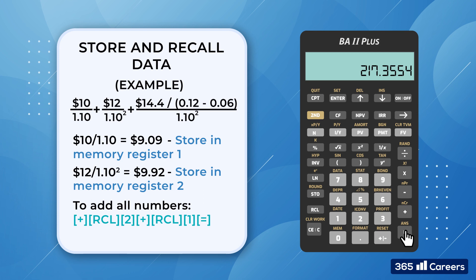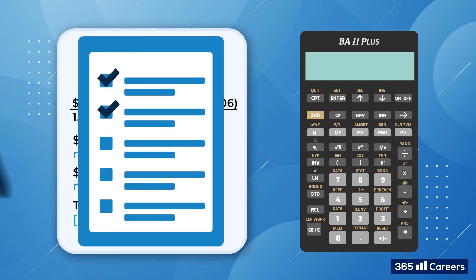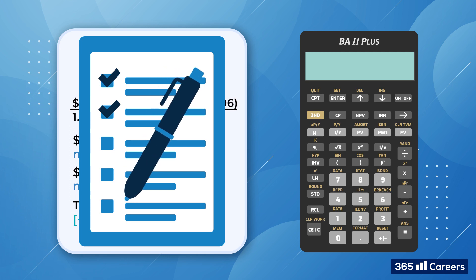The main reason we use the calculator's store function is to avoid writing down interim results. When we sit for the CFA or FRM exam, every minute is important. Moreover, when you store your interim results, you can always double-check them later. Imagine you're taking a multiple-choice test, and there's no answer choice that matches yours. Then you have to start over. Alternatively, if you've got the interim results stored, you can check each and find what you're missing. When you find the wrong value, you override the previous memory register and continue from there to get your answer.